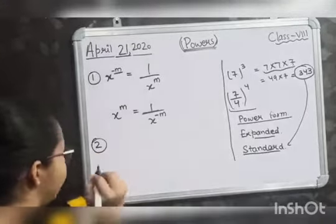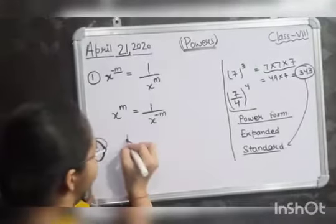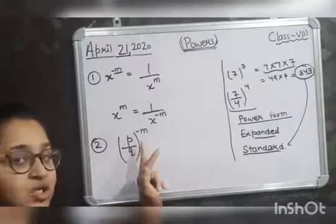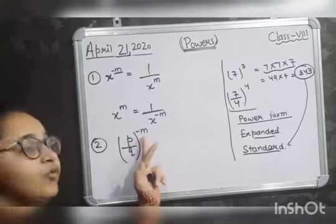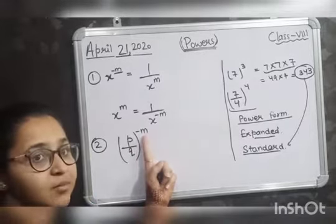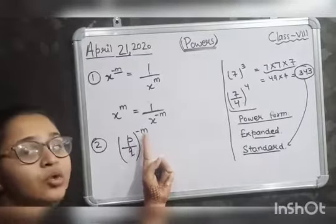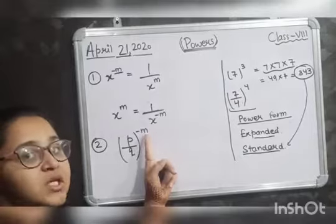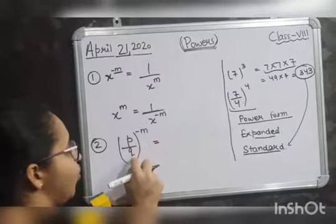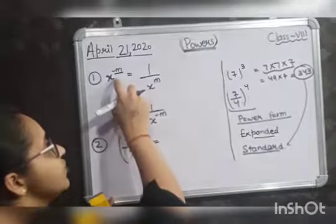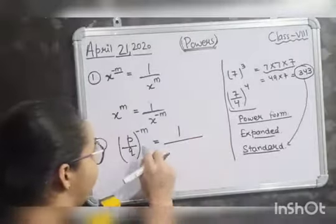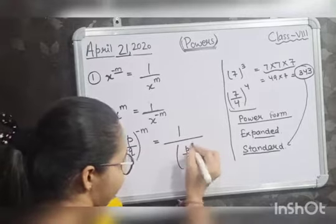Now there is one more important property. If you have a number P upon Q raised to the power minus m and you have to convert it into a positive exponent, you write it as P upon Q whole raised to the power minus m. Applying the rule X raised to the power minus m equals 1 upon X raised to the power m, you get 1 upon P by Q whole raised to the power m.